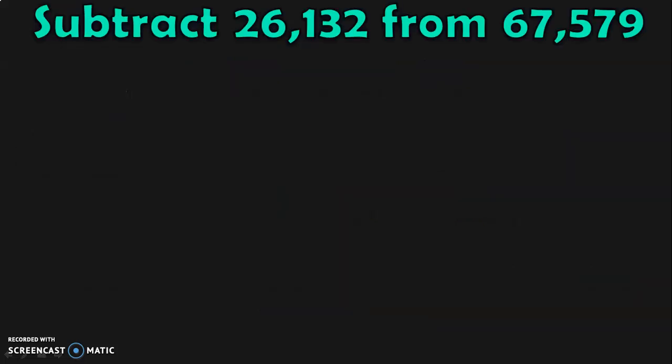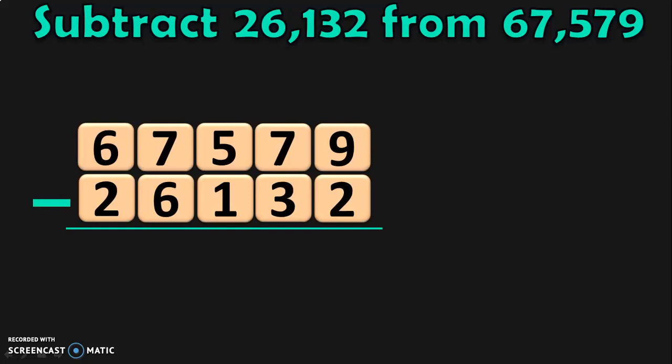First, let us begin the subtraction of two 5-digit numbers which does not involve any regrouping or borrowing. Subtract 26,132 from 67,579. I have chosen this sum to quickly refresh the concept of subtraction before we go into the regrouping concepts.